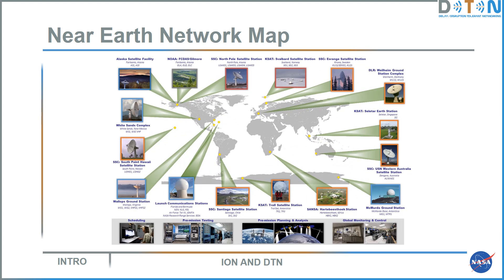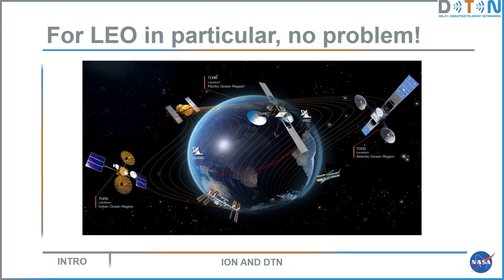The Near Earth Network has very capable tracking stations and ground stations all around the planet. Orbiting satellites can be in view of one or another of these ground stations pretty much all the time. For low Earth orbit, the distances are quite short, the spacecraft are only a few hundred miles up, and there's plenty of coverage, so it would seem that for low Earth satellite communications, we don't need anything more than what we already have — possibly just the internet.